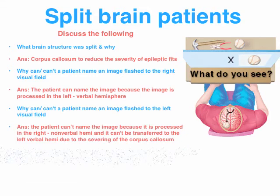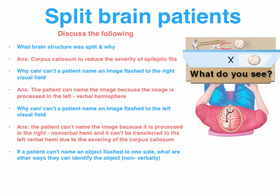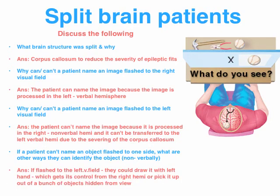A part C question might ask you to discuss other ways the patient can identify the object. You'll need to be specific: if it's flashed to the left visual field, they could draw it with their left hand, which gets its control from the right hemisphere, or pick it up out of a bunch of objects hidden from view with their left hand. It's important that you mention the left hand, which again gets its control from the right hemisphere.